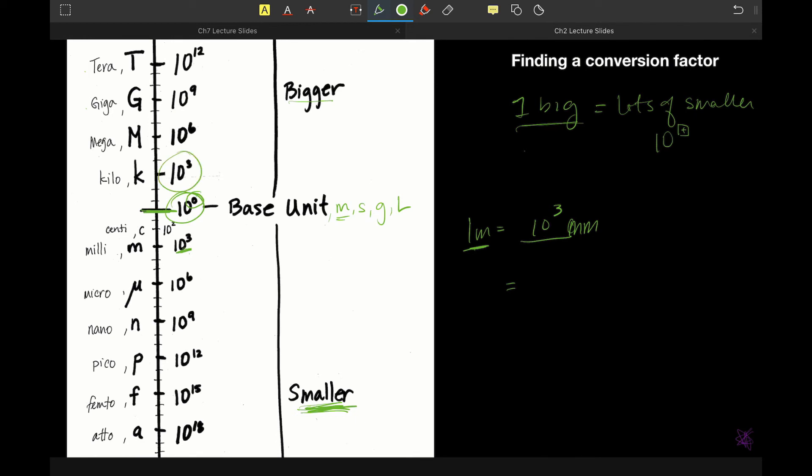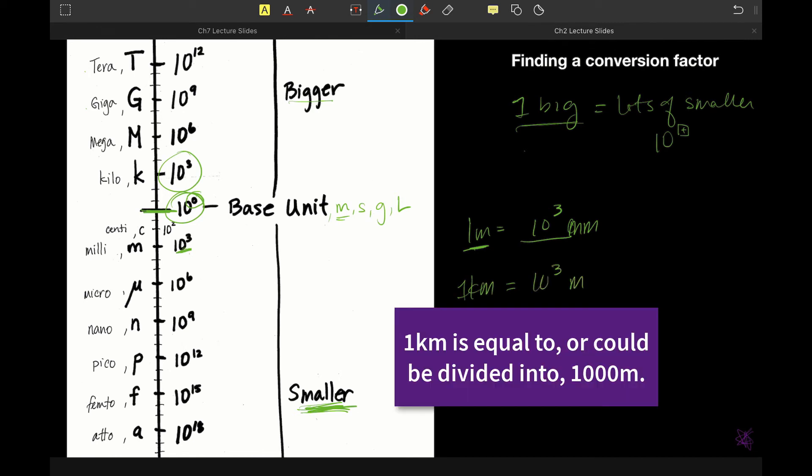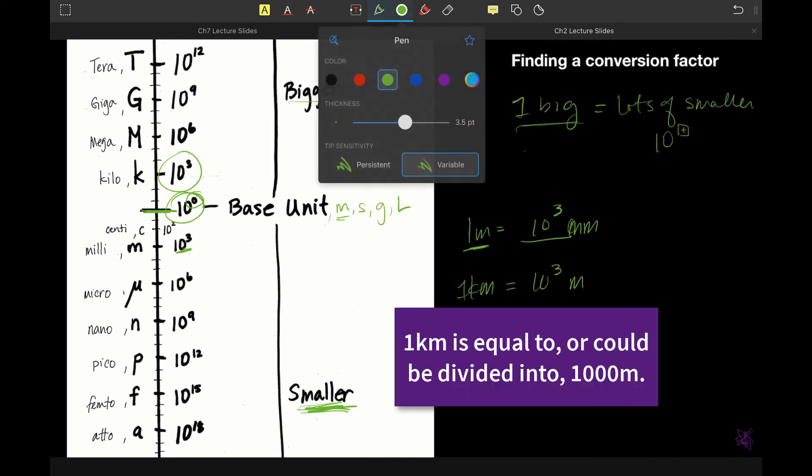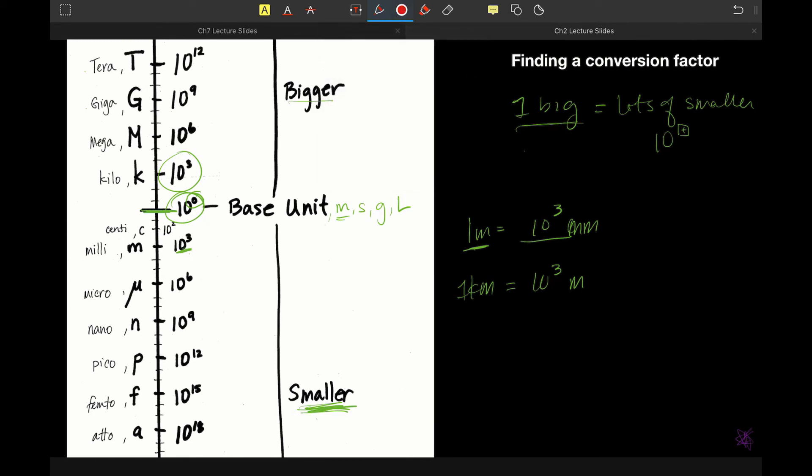Now, if I wanted to do the relationship between meters and kilometers, now the bigger unit is kilometer is equal to 10 to the third meters. Does that make sense? Let's do another one. Let's say that we wanted to talk about gigaliters and liters. Same thing. Which of these is bigger? One gigaliter is equal to 10 to the ninth liters.